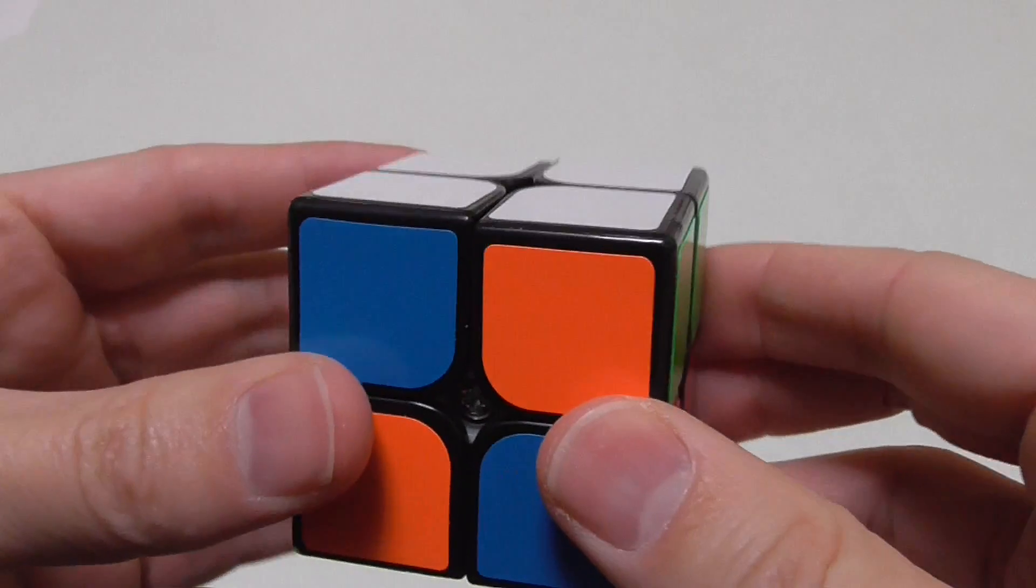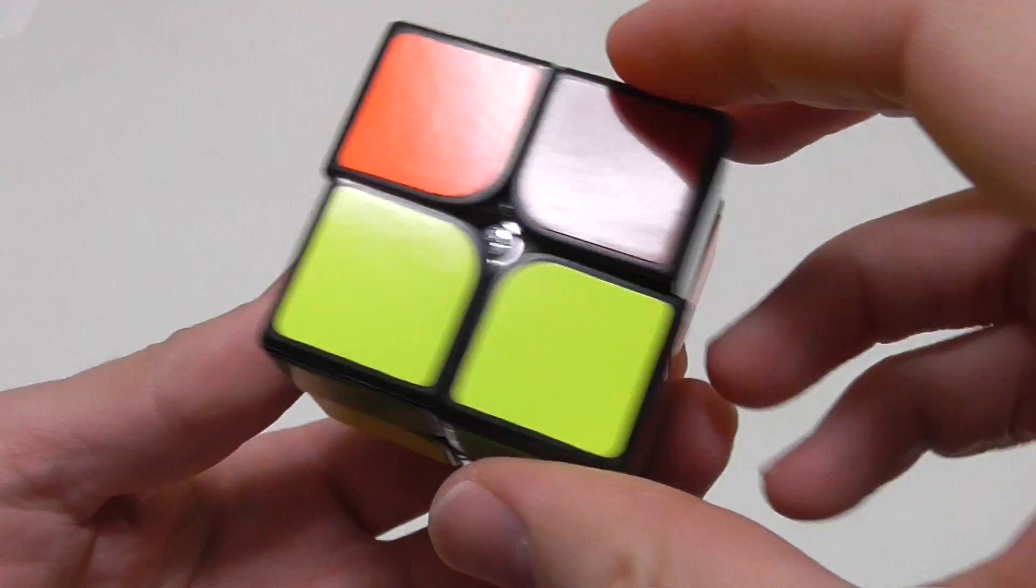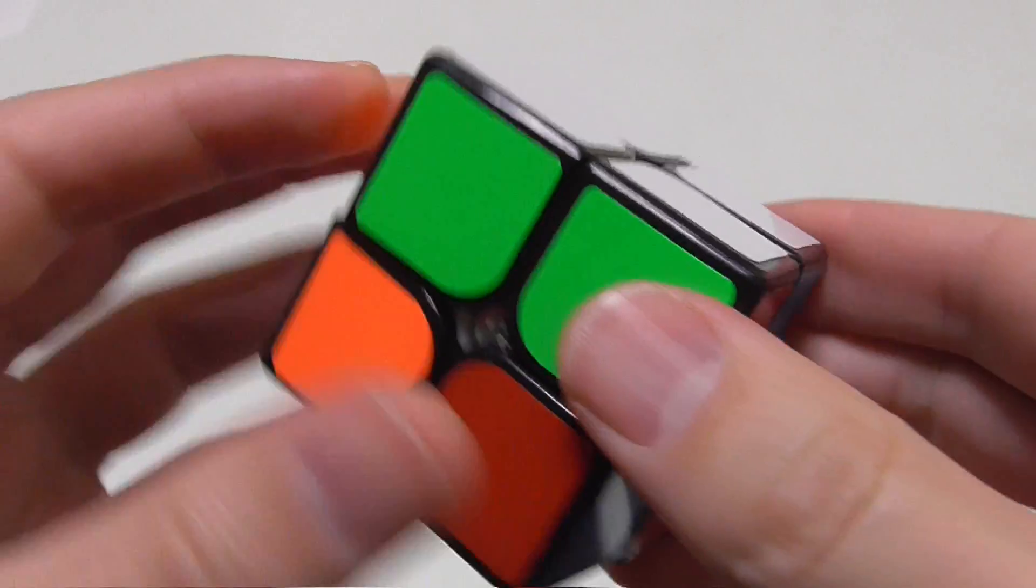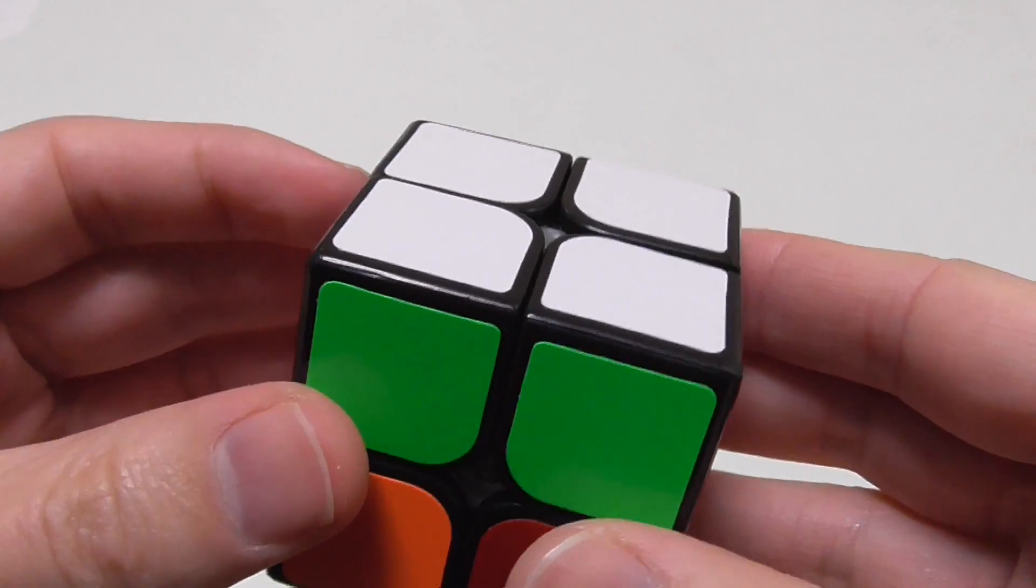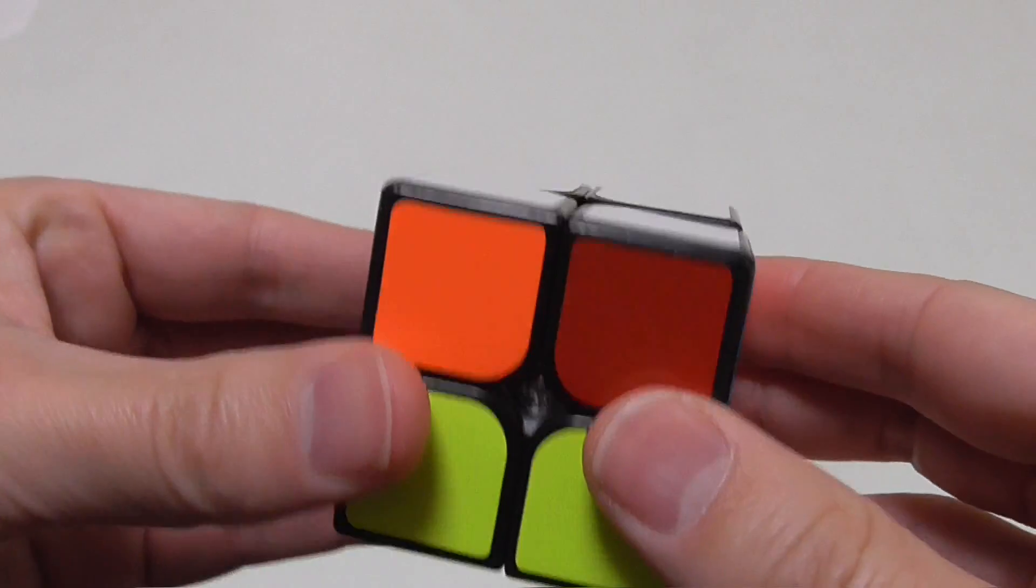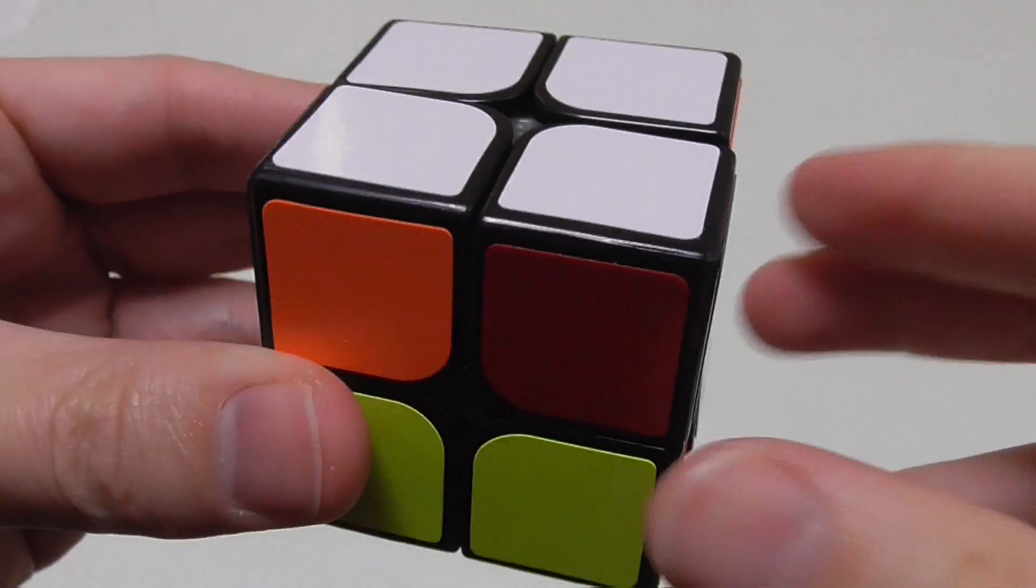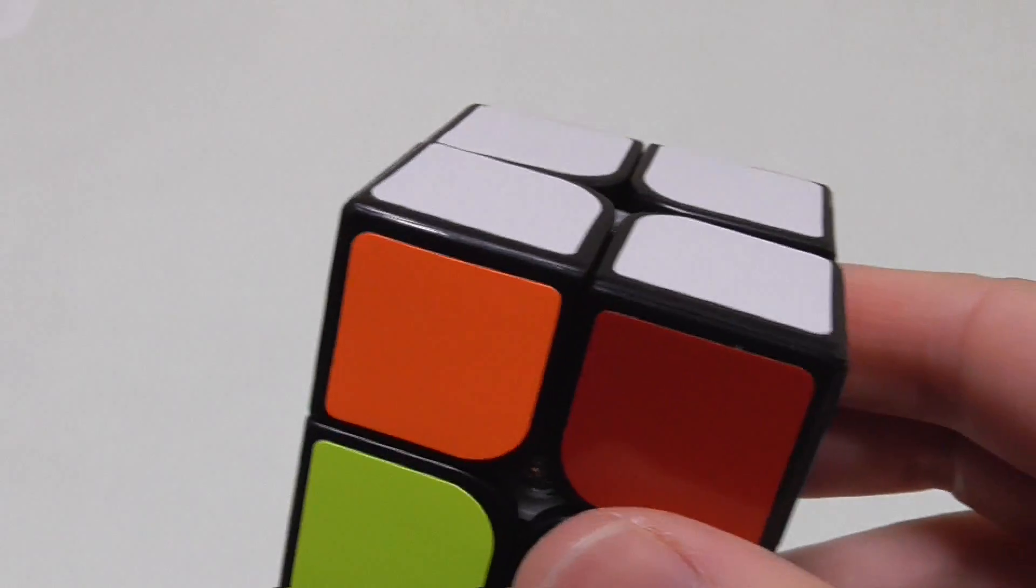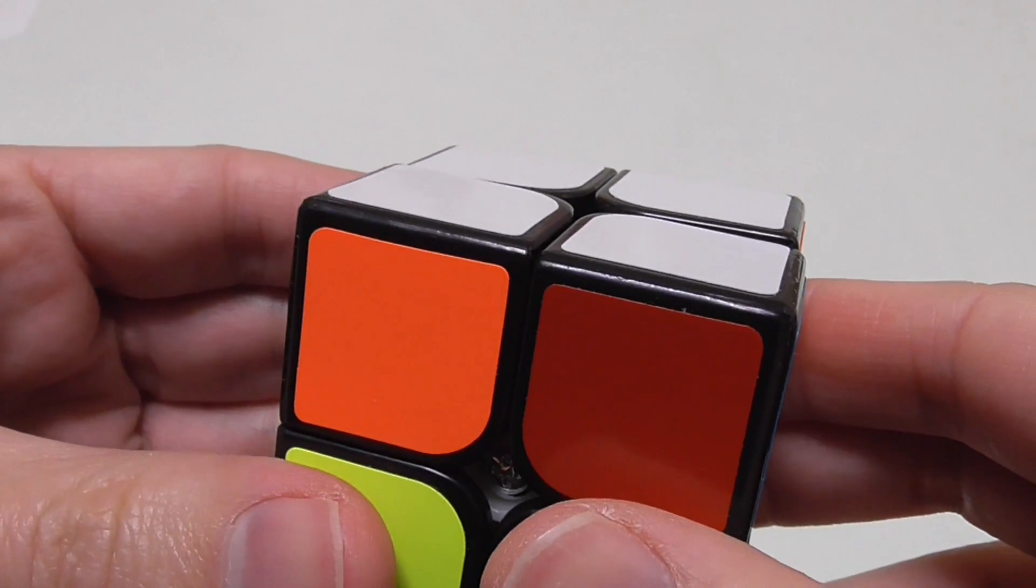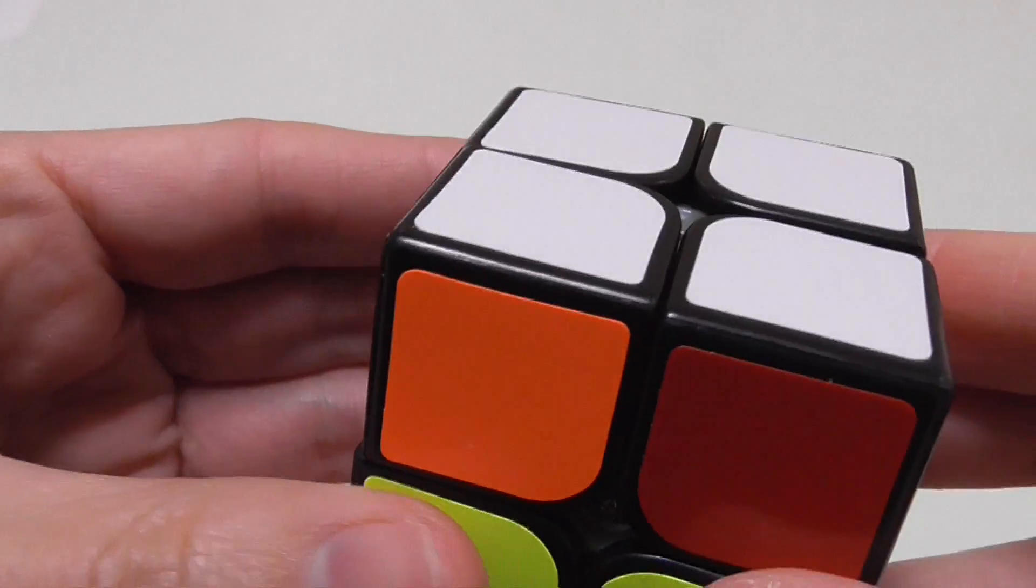So once you've got the white face, step two is to align the colors in the top layer. You may have some colors already aligned, in which case you have to place them away opposite you, the side that's away from you. If you don't have any colors that are aligned, just start with any side facing you. Then you follow this algorithm to align the first layer.